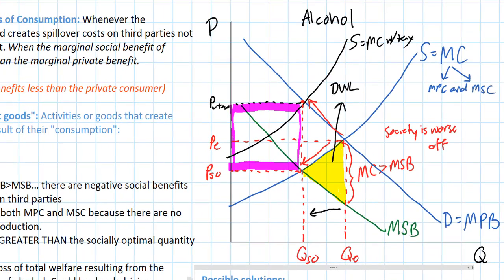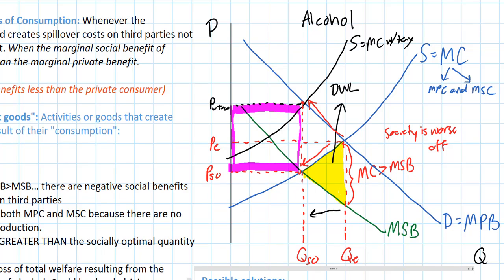So we've got a graph here. We've shown how the consumption of a good creates negative spillover benefits—in other words, costs—imposed on third parties not involved in that good's production or consumption. This means that the equilibrium quantity will be greater than the socially optimal quantity, and there will be a welfare loss resulting from the over-consumption of the good.